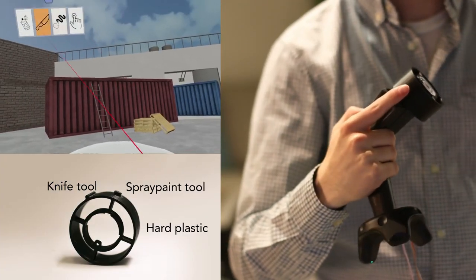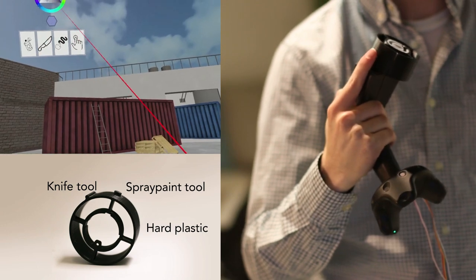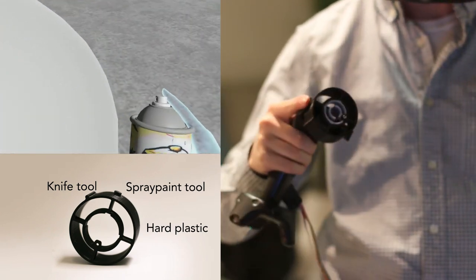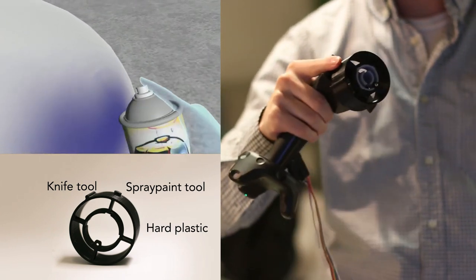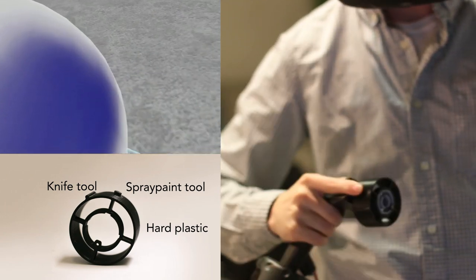By sensing the force the finger exerts on the wheel, we turn passive elements into interactive tools. Here we show how a simple plastic nub can be used as the tip of a can of spray paint.